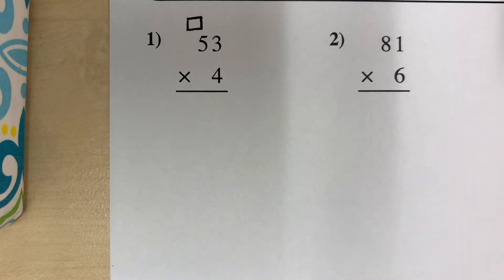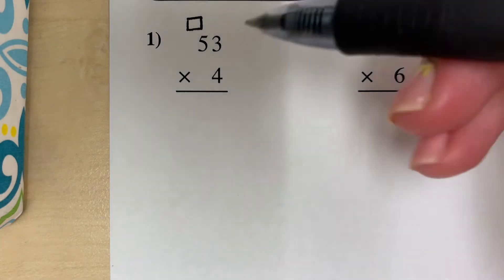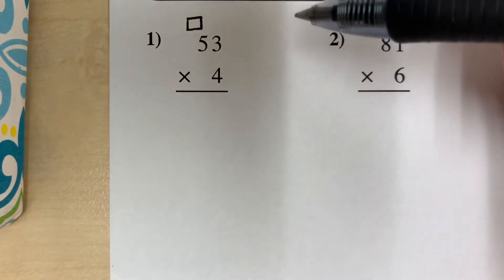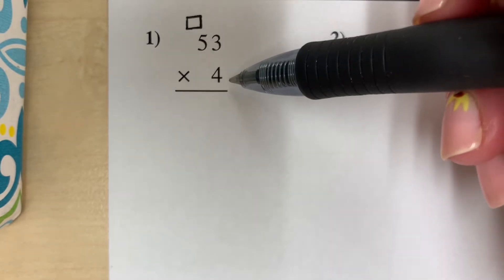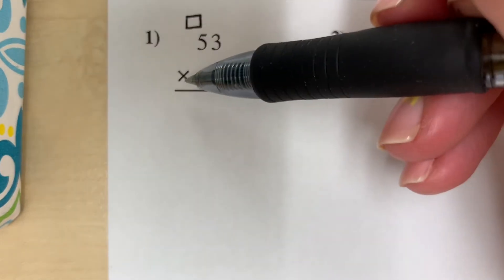All right, let's look at multiplication using the traditional algorithm with a single multiplier. So we are multiplying 53, the multiplicand, by our multiplier, a single digit, which is 4. So 53 times 4.